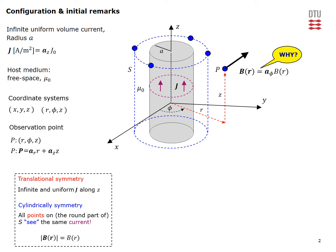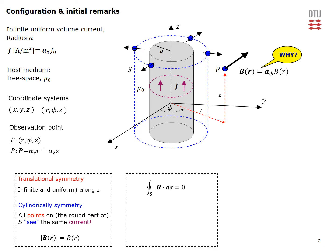Now consider the direction of the B field. If we assume an R component — a radial component — then by cylindrical symmetry it would exist at all points around the wire. Such a radial B field component would give rise to a flux of the B field through a closed cylindrical surface S, which conflicts with the fundamental law that the divergence of B is zero. So we must conclude there cannot be any R component of the B field.